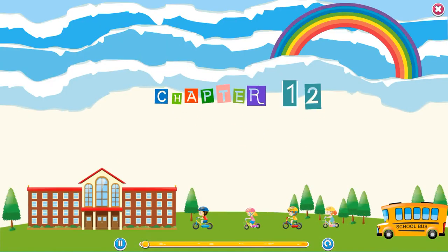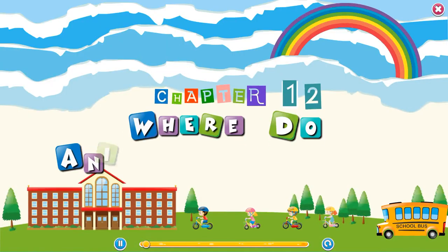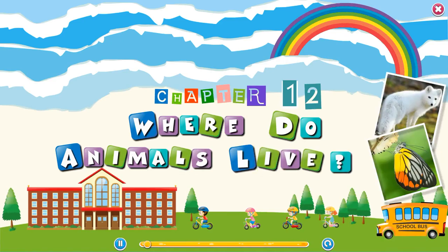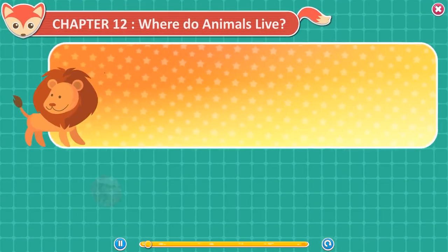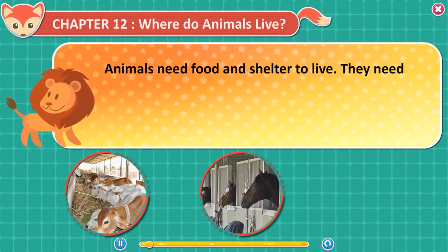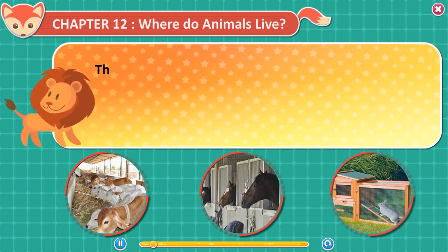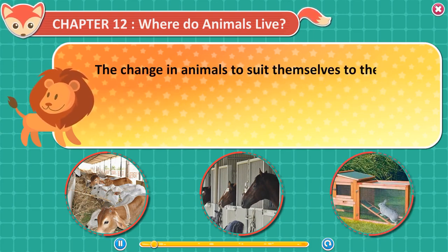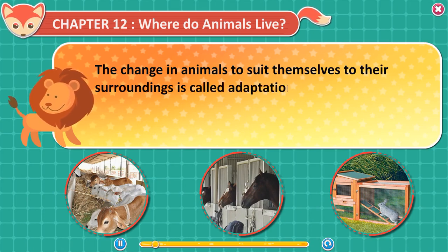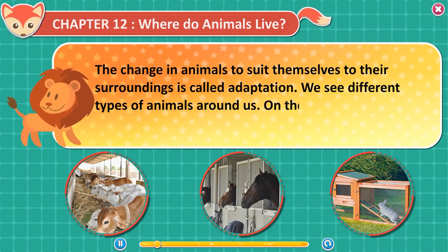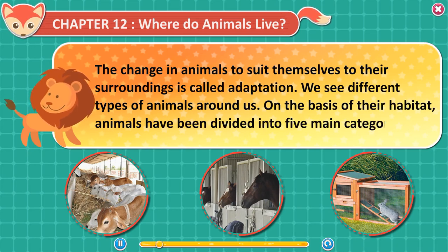Chapter 12: Where do animals live? Animals need food and shelter to live. They need shelter to protect themselves from enemies, heat, cold, and rain. The surroundings in which they live is called their habitat. The change in animals to suit themselves to their surroundings is called adaptation. On the basis of their habitat, animals have been divided into five main categories.